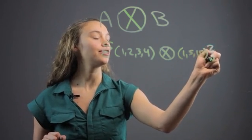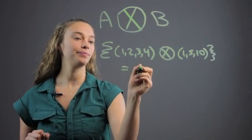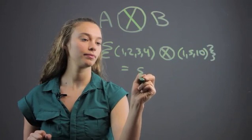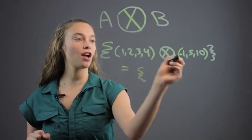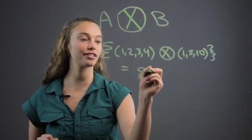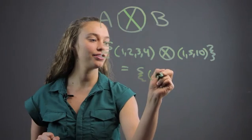Okay. So that is going to equal... Well, we're going to take 1 times all these numbers here for the first one. So that will be (1, 2, 3, 4).